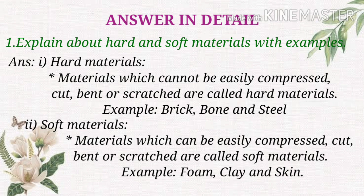Soft materials: materials which can be easily compressed, cut, bent or scratched are called soft materials. Example: foam, clay and skin. Explain about hard and soft materials with example. Hard materials: materials which cannot be easily compressed, cut, bent or scratched are called hard materials. Example: brick, bone and steel. Soft materials: materials which can be easily compressed, cut, bent or scratched are called soft materials. Example: foam, clay and skin. Thank you children.